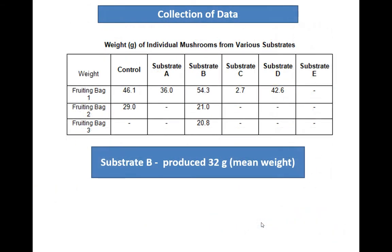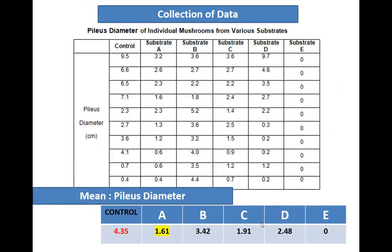Substrate B produced the highest value of mean weight. In terms of pileus diameter, the control substrate has the highest value while substrate A has the least value.